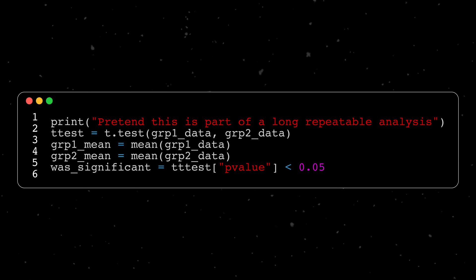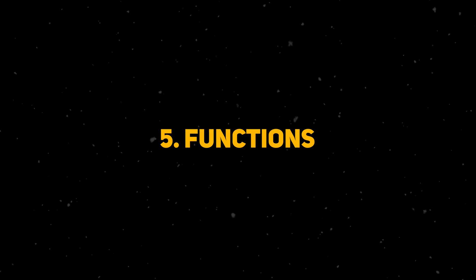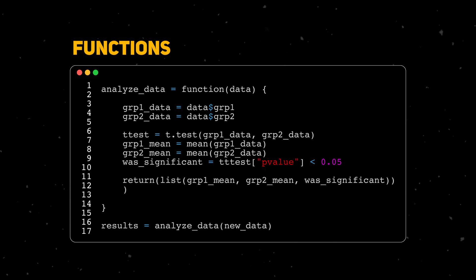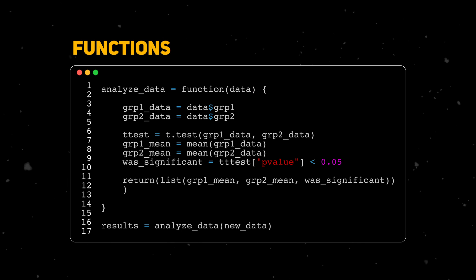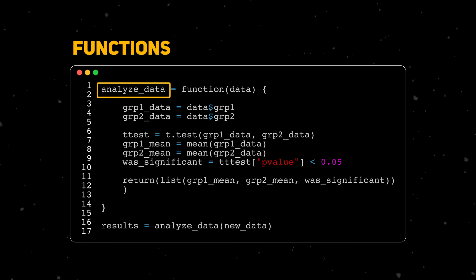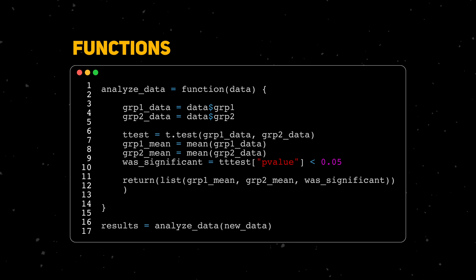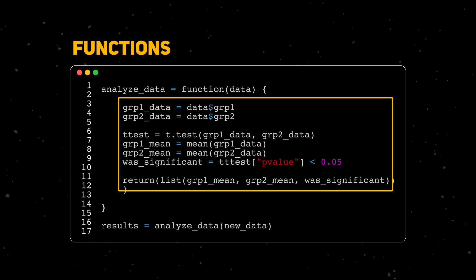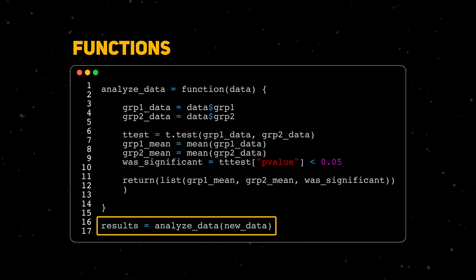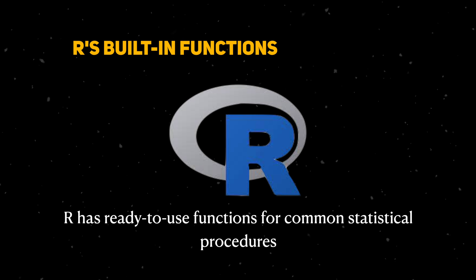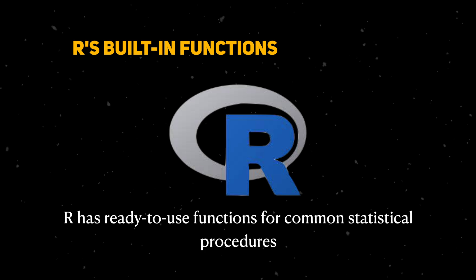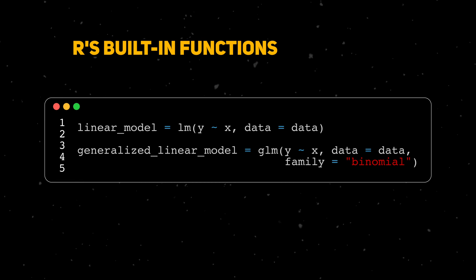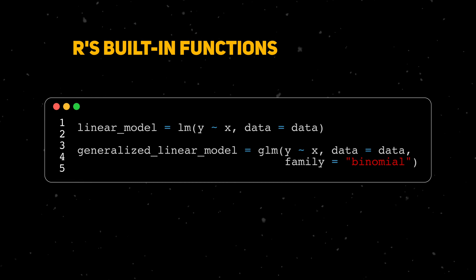It's common to need to use the same set of code many times. Rather than rewriting the same code over and over again, you should place it inside a function. A function is just a piece of reusable code — we can give it inputs that we want processed inside it. To define a function in R, you give it a name, write the function keyword, specify what inputs it should take, and identify all the code you want to run. As a statistical programming language, base R provides lots of built-in functions for common statistical procedures — for example, the lm function lets us do linear regression, while the glm function lets us create generalized linear models.